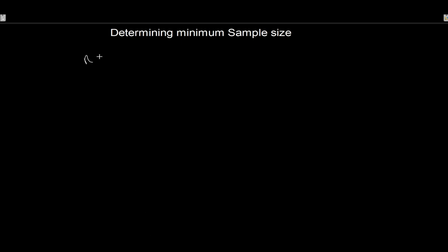In determining minimum sample size, what you want is a sample size N that is greater than or equal to some minimum value. Bigger is always better, but this is the minimum you should obtain. The formula is: N ≥ (Z · σ_x / E)², where we square the entire expression of Z times the population standard deviation divided by the maximum allowable sampling error E.